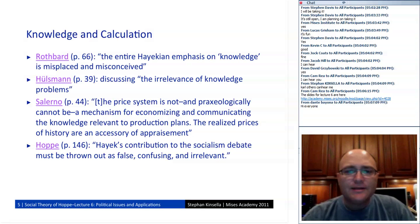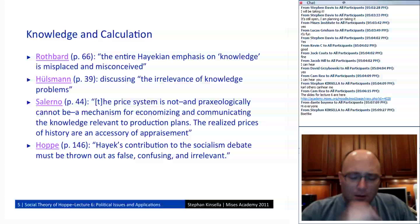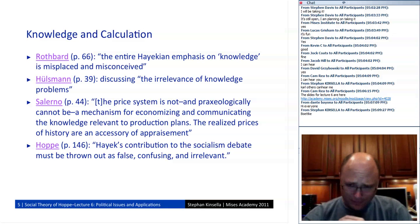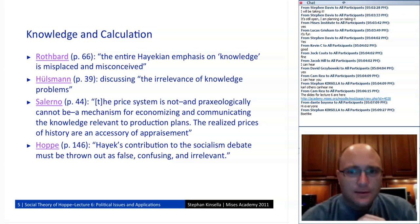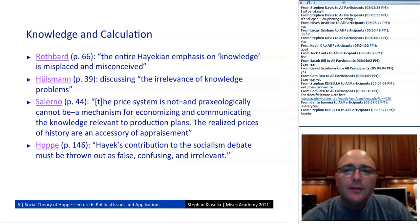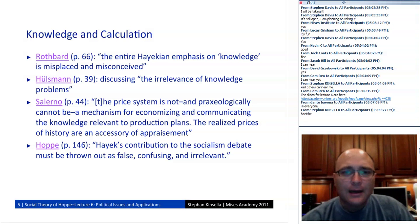Hayekians like Steve Horowitz and Pete Boettke will say that the Hayekian knowledge stuff is a flip side of the coin — another way of explaining the insight Mises had, or complementary to it. But some Hoppeans and Misesians don't believe that; they believe it was a misleading emphasis. I tend to think they're correct, although I do think there's something about Hayek's emphasis on knowledge that could be integrated into how we look at the role of knowledge in human action. If anyone has questions about this, we can take it up at the end.